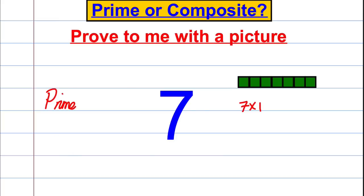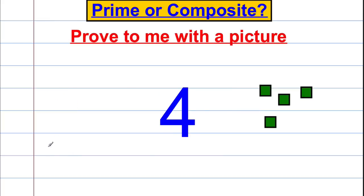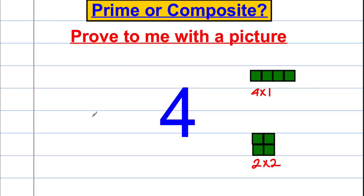Try the next one: four. Four can be written as four multiplied by one, but also two multiplied by two. So four turns out to be a composite number because although one and four multiply to give four, there's also another number — namely two — that multiplies up to give four.